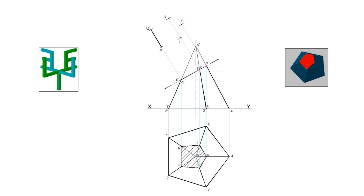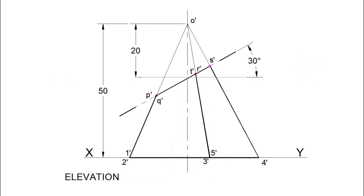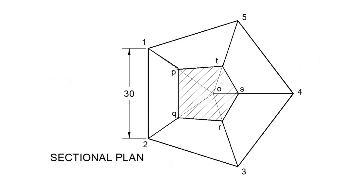Join these points P, Q, R, S, and T. Draw sectional lines or hatching lines in this closed area. Thus the elevation, sectional plan, and true shape of the pentagonal pyramid are drawn.